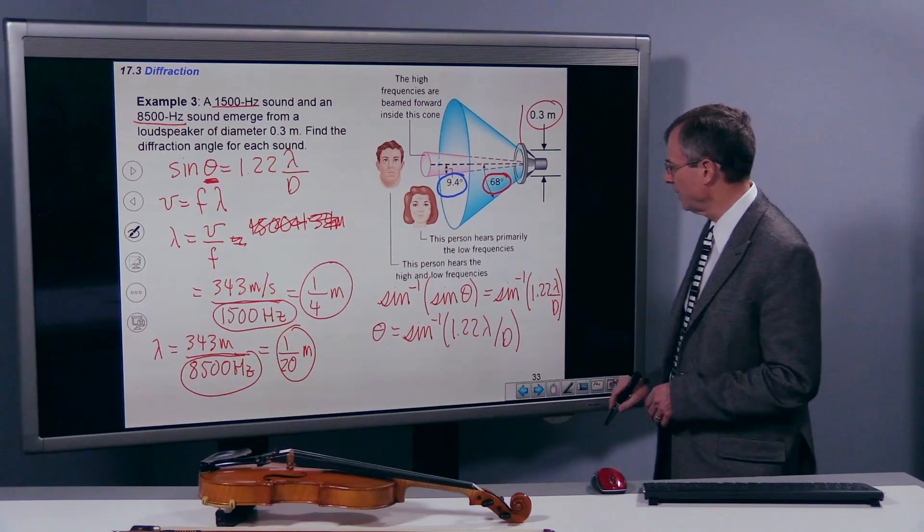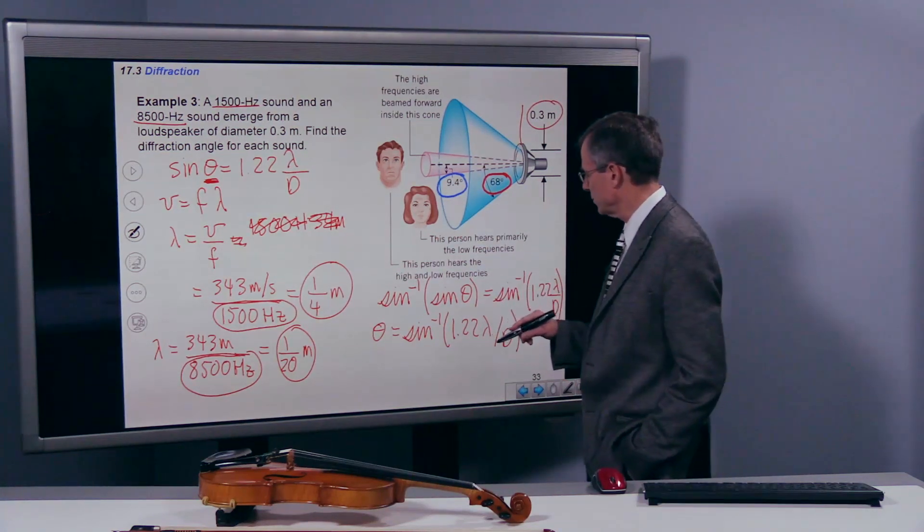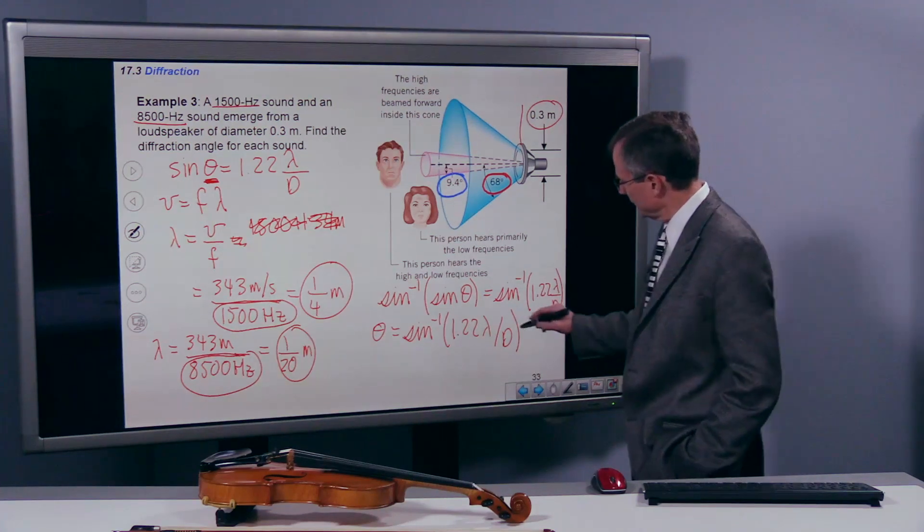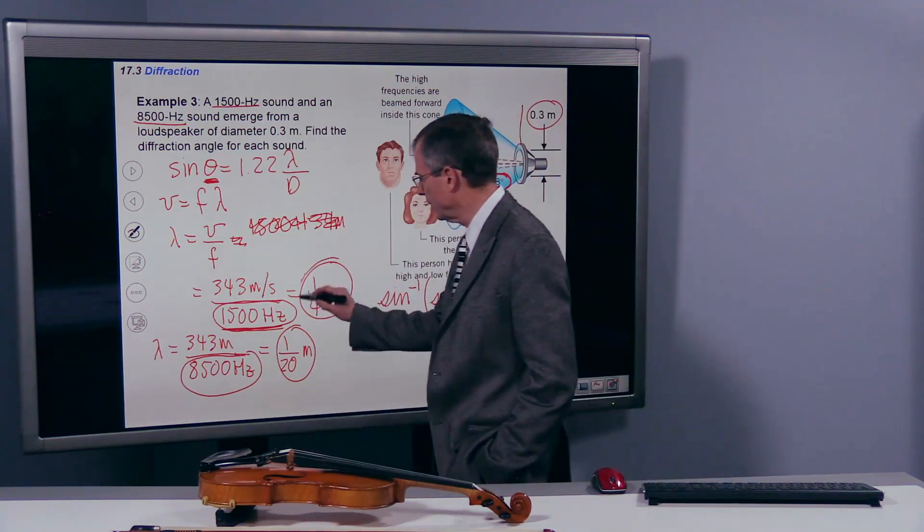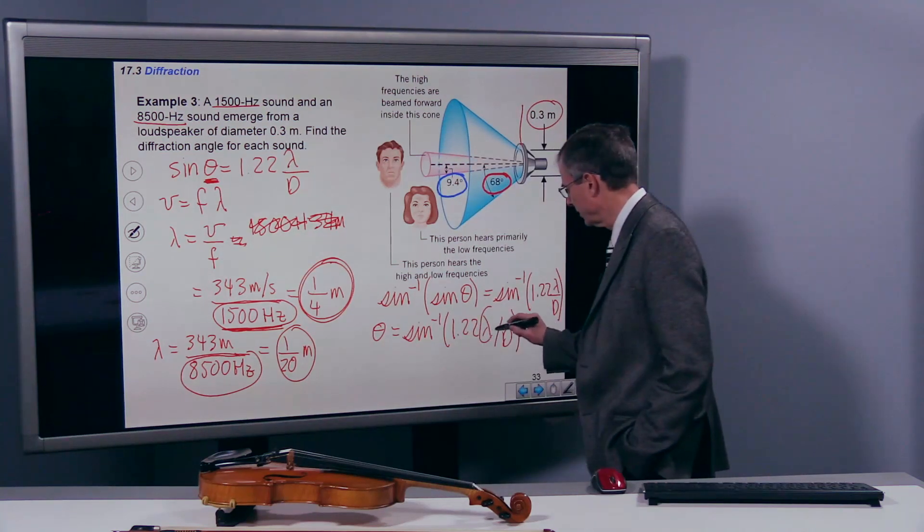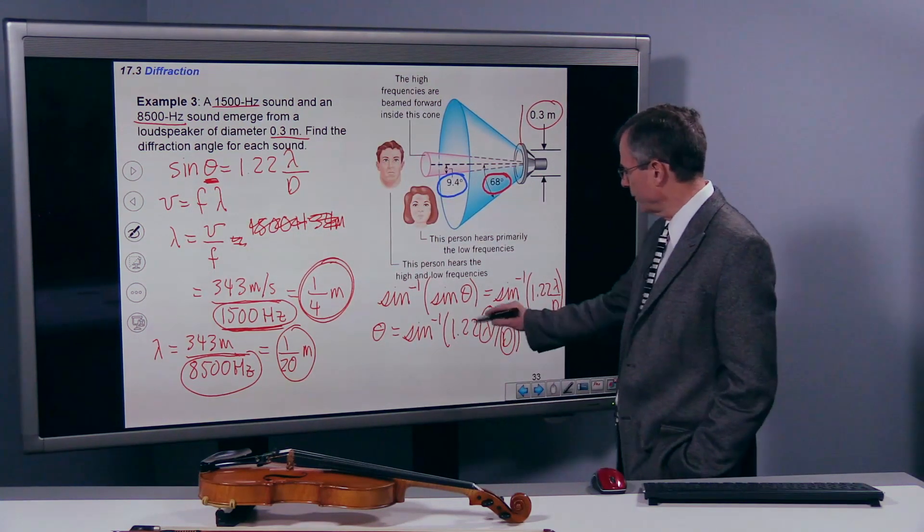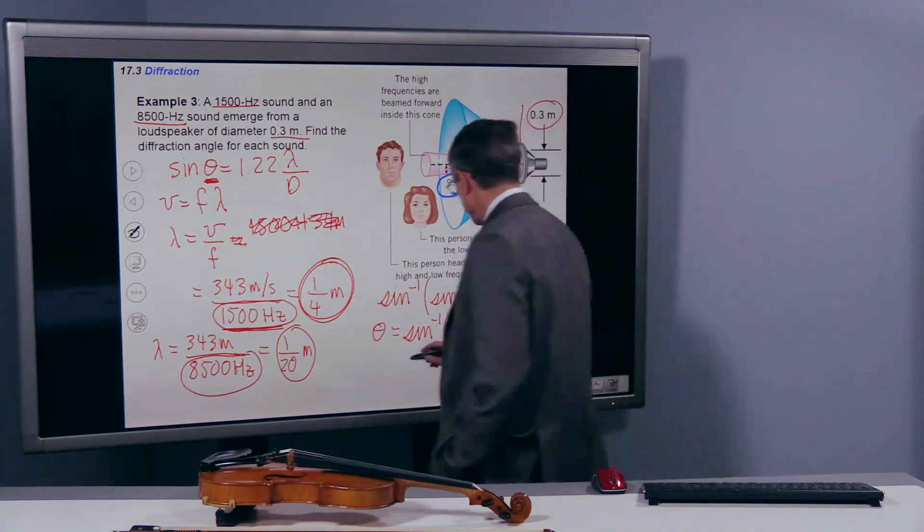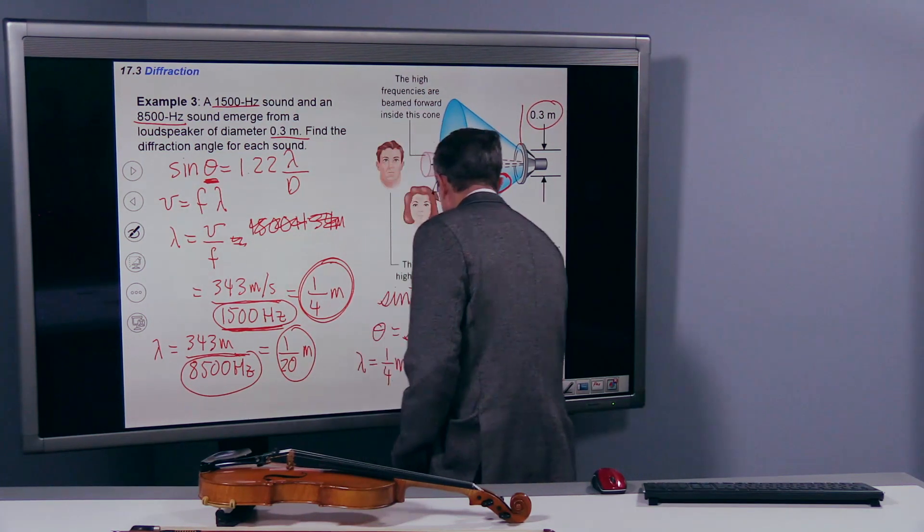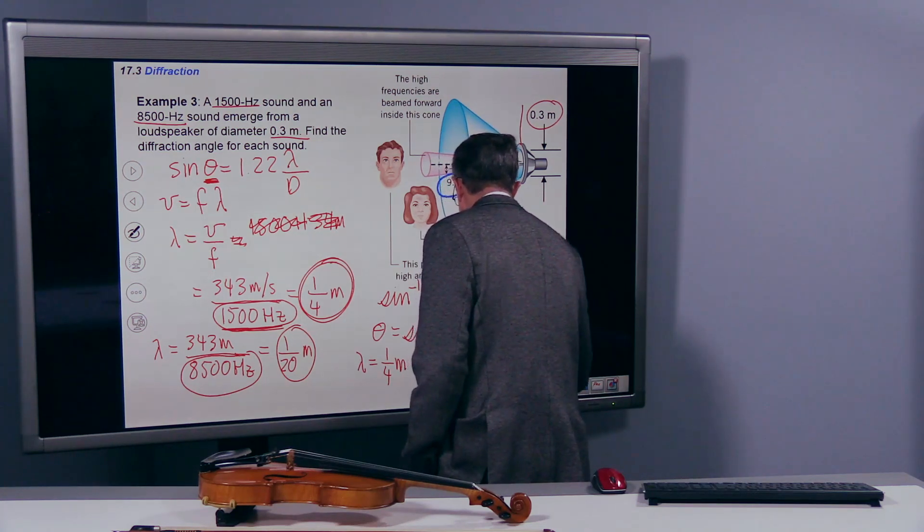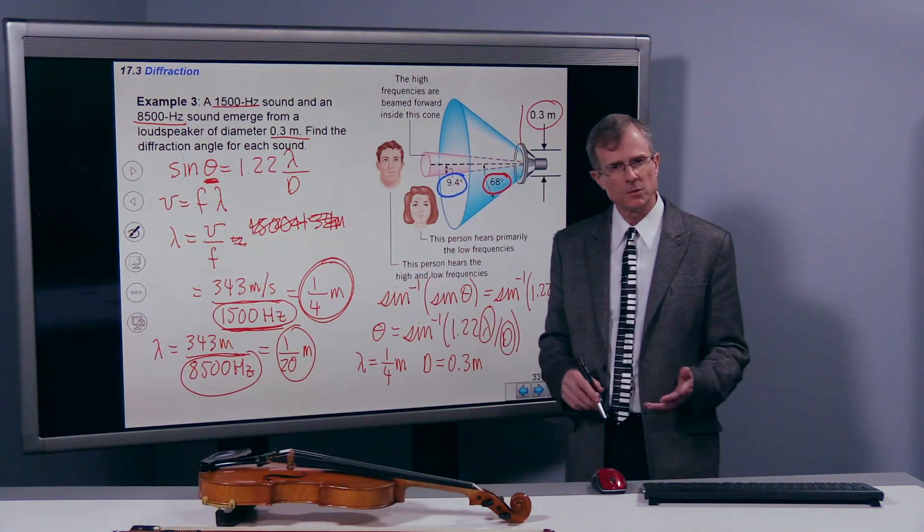Now we have everything we need to solve the problem for each of the two angles. Let's look first at this wavelength, the wavelength of one-fourth of a meter. And that'll go in here, and then the diameter is 0.3, that'll go in here. So we'll have one-fourth of a meter divided by the diameter. Wavelength is about a fourth of a meter, and the diameter is 0.3 meters. How is the wavelength compared with the diameter? Are they comparable? Is one bigger than the other? Well, 0.3, one-fourth is about 0.25. So they're actually pretty close to each other.